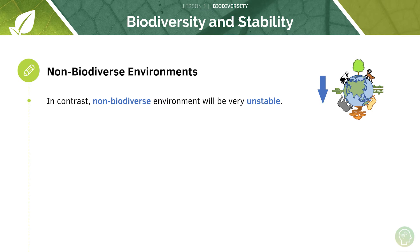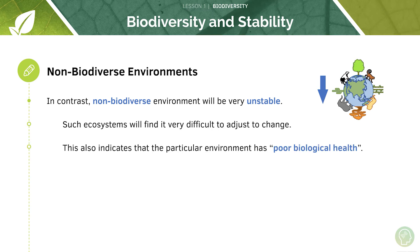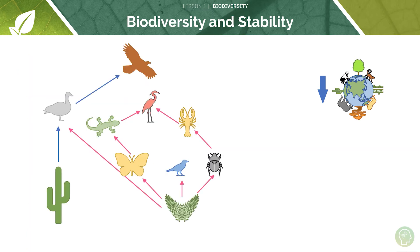In contrast, non-biodiverse environments are very unstable. Such ecosystems find it very difficult to adjust to change, and this indicates poor biological health. There will be fewer overlapping food webs and fewer opportunities to find supplies and shelter. Therefore, if one species is affected, there could be a huge knock-on effect on other species.